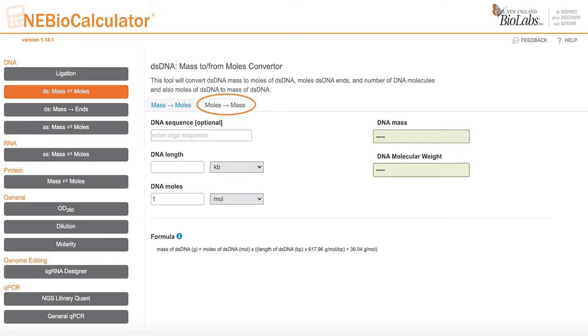Based on the parameters of our example, we know that the size of the fragment is 6 KB. Enter that into the DNA length section of the tool. Under DNA moles, you know that 27 femtomoles is recommended. Enter that into DNA moles. Please make sure that you are selecting the right units from the pull-down menu.